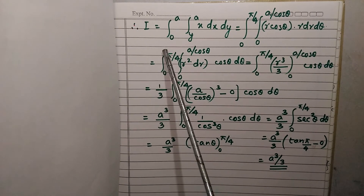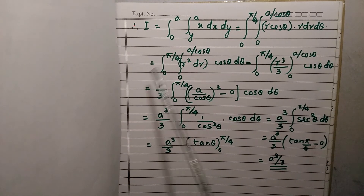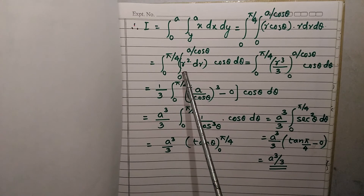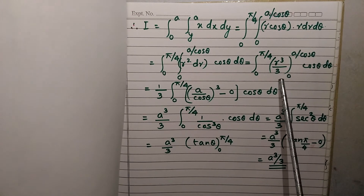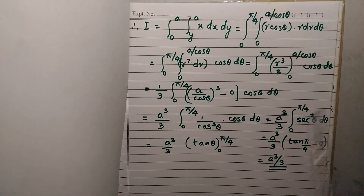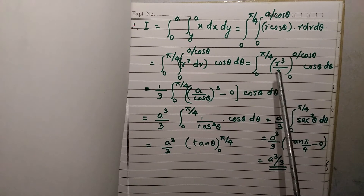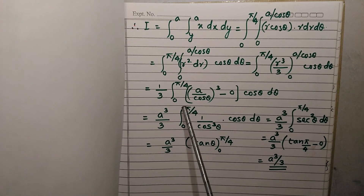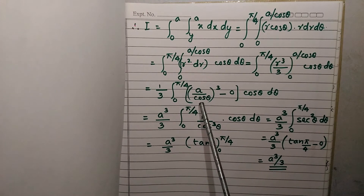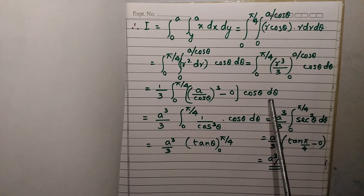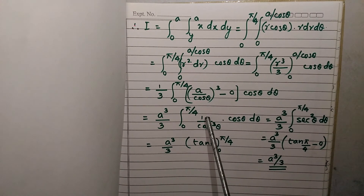That equals the integral from 0 to pi by 4. Integrating with respect to R: R times R is R squared cos theta, so the integral of R squared is R cubed upon 3, evaluated from 0 to A by cos theta, times cos theta d theta. Taking 1/3 outside as a constant: (1/3) times the integral from 0 to pi by 4 of A cubed upon cos cubed theta, times cos theta d theta.